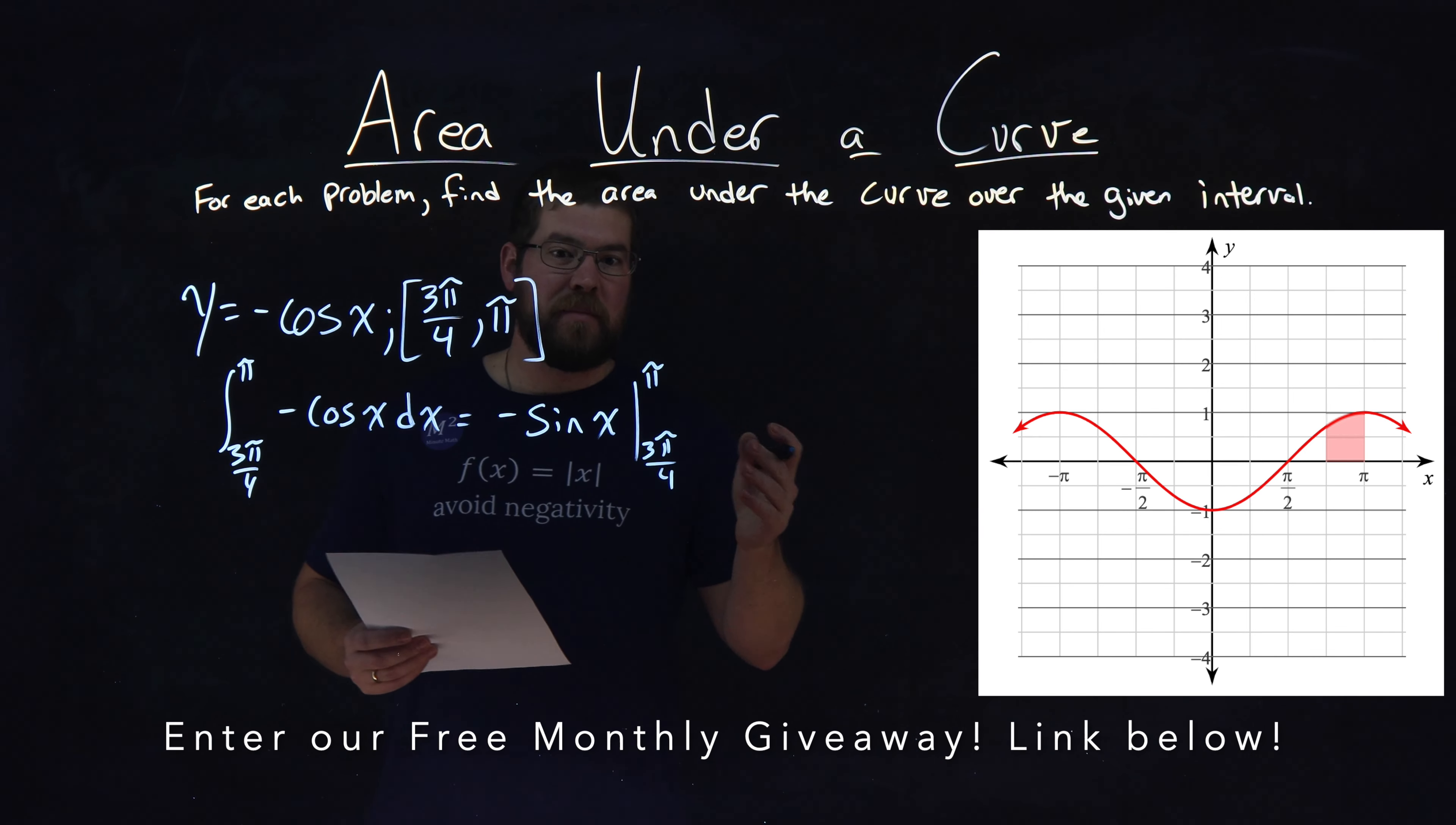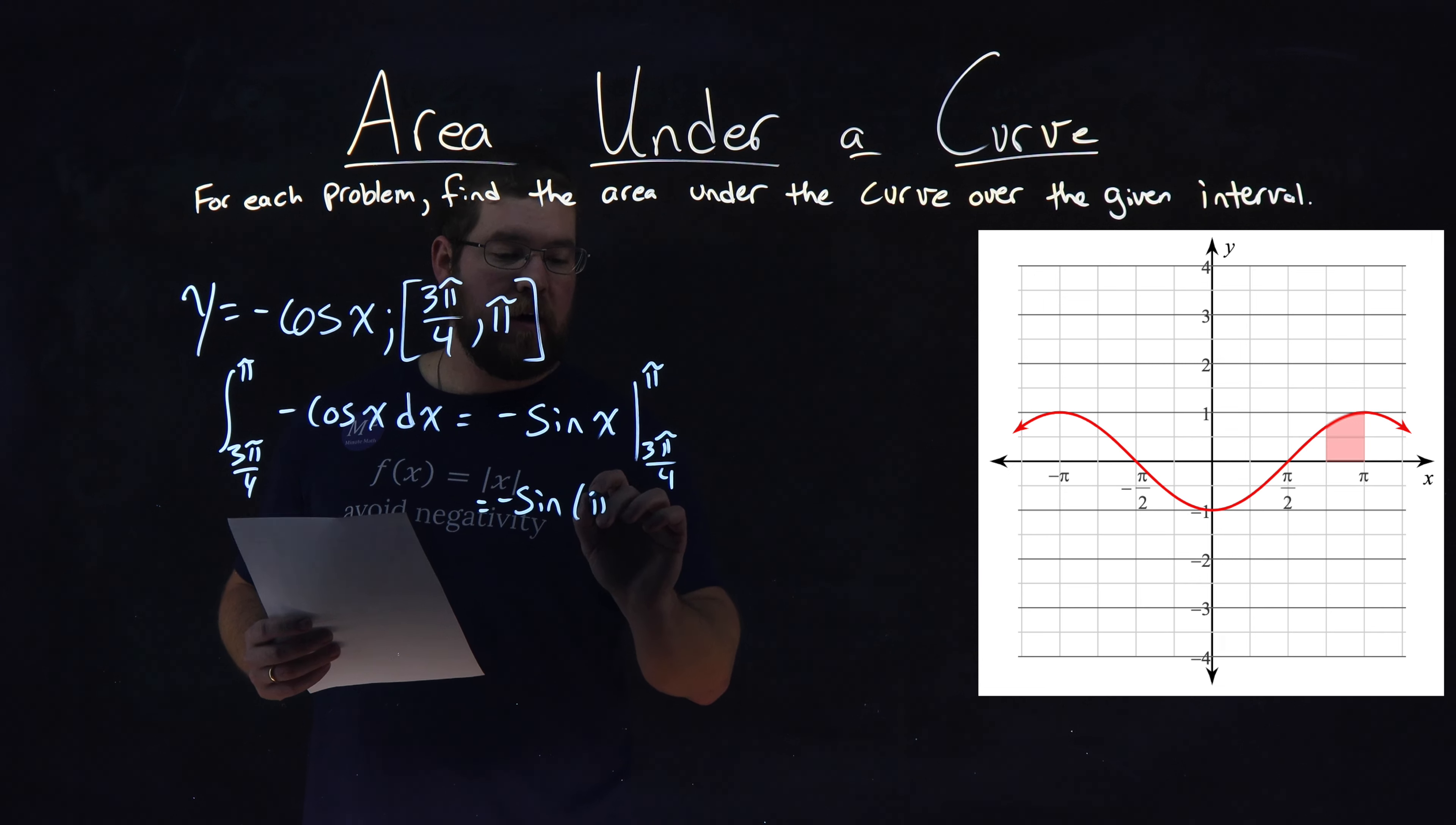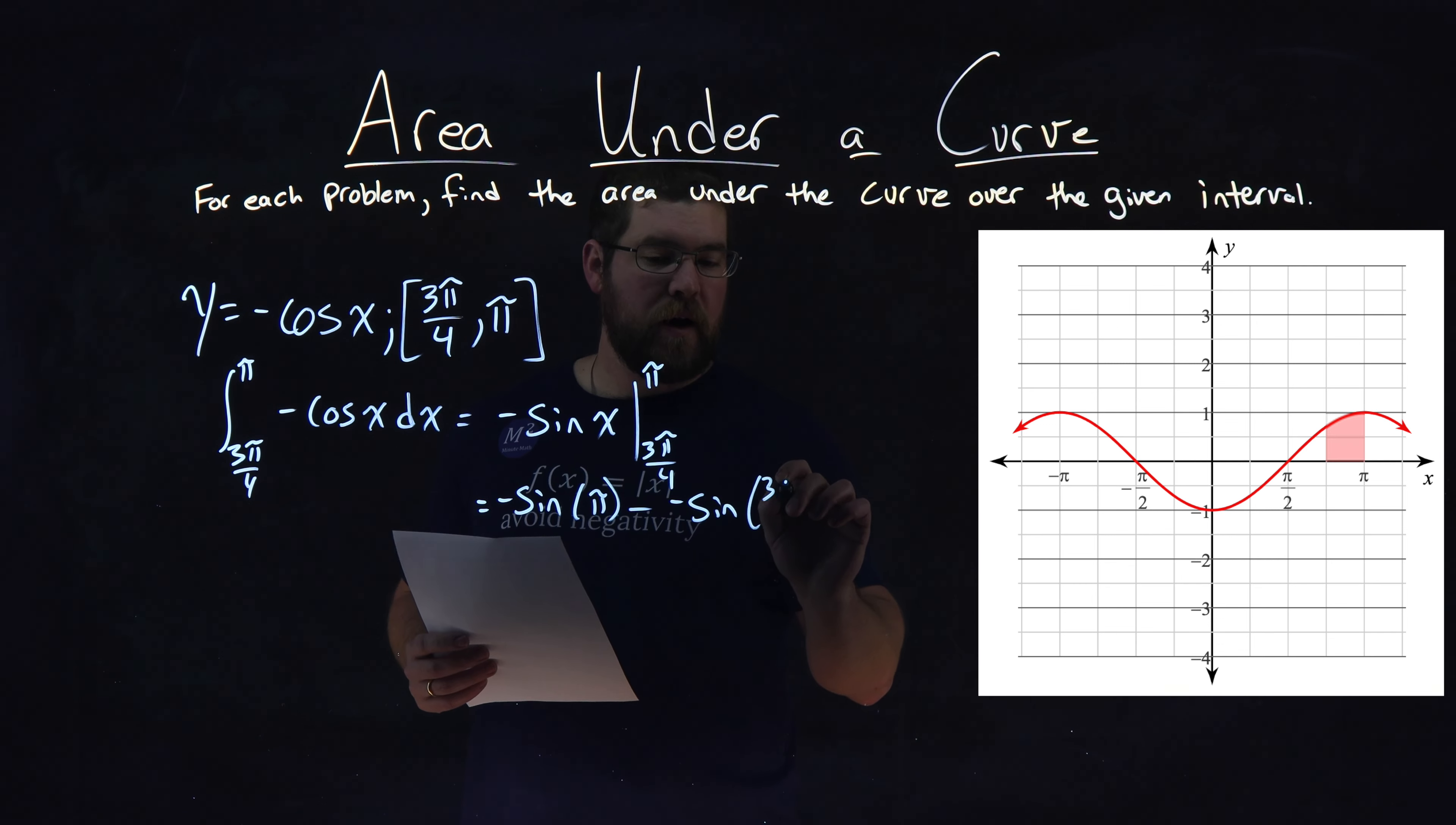From there, we need to plug in our values. So we have negative sine of π first goes in, minus the negative sine of the first value, 3π over 4. Okay?